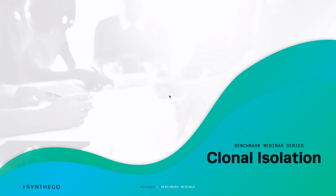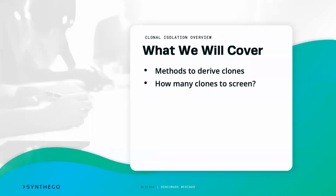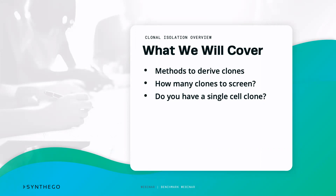In this segment, we're going to cover clonal isolation. We will look at how to derive single cell clones, work out how many clones you actually have to screen, and look at how you can determine if you have a single cell clone. So what is clonal isolation? This is the very tail end of the CRISPR editing workflow, where we have a transfected population of cells that we're now trying to make into a single cell population — deriving a cell line from a single cell, thereby being a clonal population.